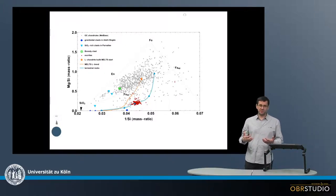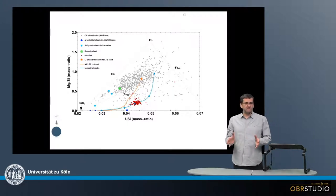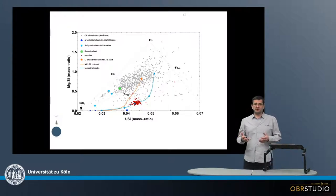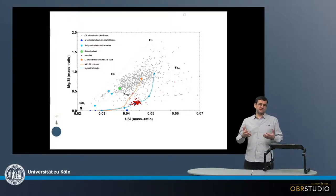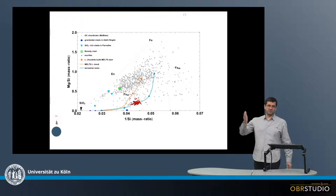Now there are various models for this, but there are also some very fundamental differences among these models. For example, some models assume that chondrules formed within the protoplanetary disk by short, high-temperature events induced by shockwaves or lightning or whatever.